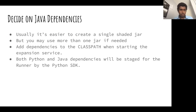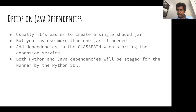Then you have to decide on dependencies, since the runner has to execute this class. You usually create a single fat jar, though multiple jars are also fine. You add these dependencies to the classpath when starting the expansion service. Once you do that, the Python SDK will stage both Java and Python dependencies for the runner. Next, you have to decide on the expansion service. Almost always you would want to use the built-in expansion service — the Apache Beam SDK ExpansionService class. You could define your own expansion service, but the one we already have should be sufficient. It takes a single parameter, which is the port of the expansion service.